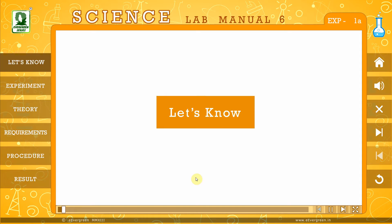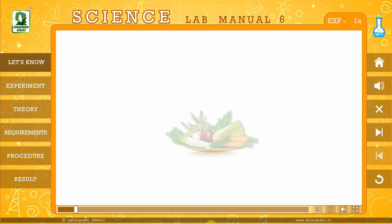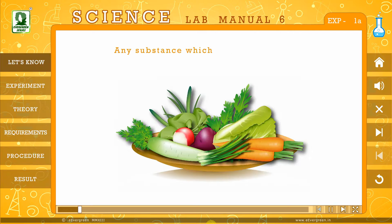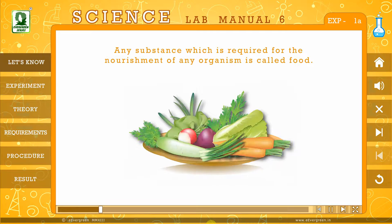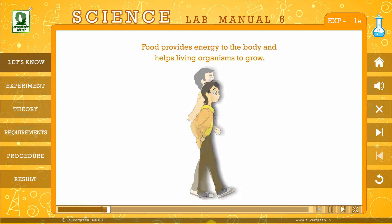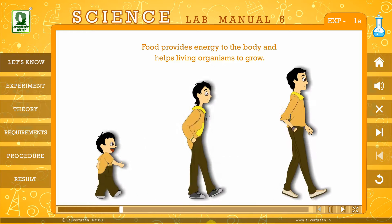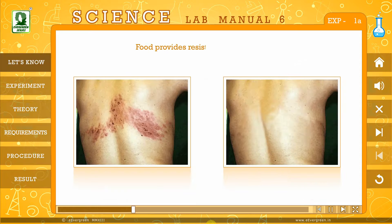Before moving on to the experiment, let us understand that any substance which is required for the nourishment of any organism is called food. Food provides energy to the body and helps living organisms to grow. Food provides resistance against diseases and also helps in repairing damaged parts.